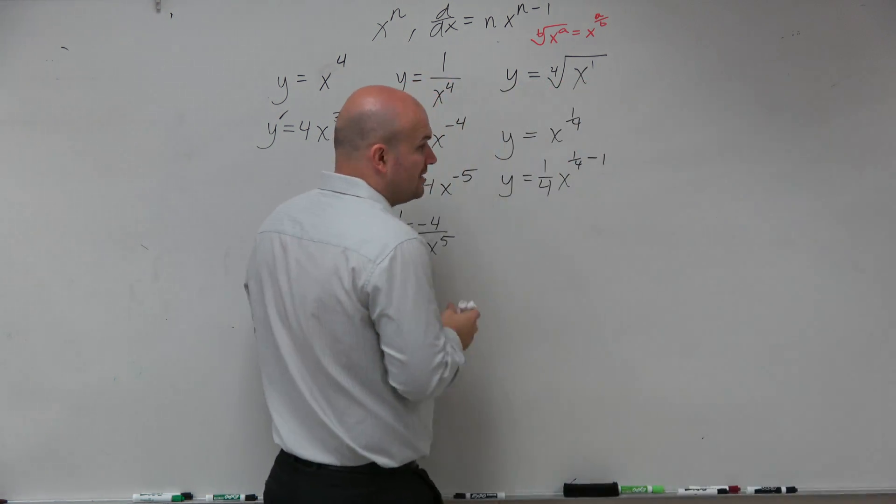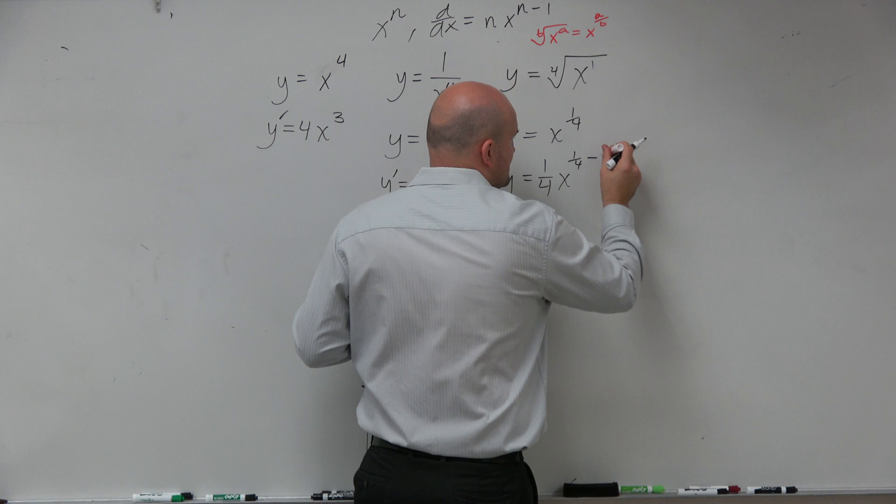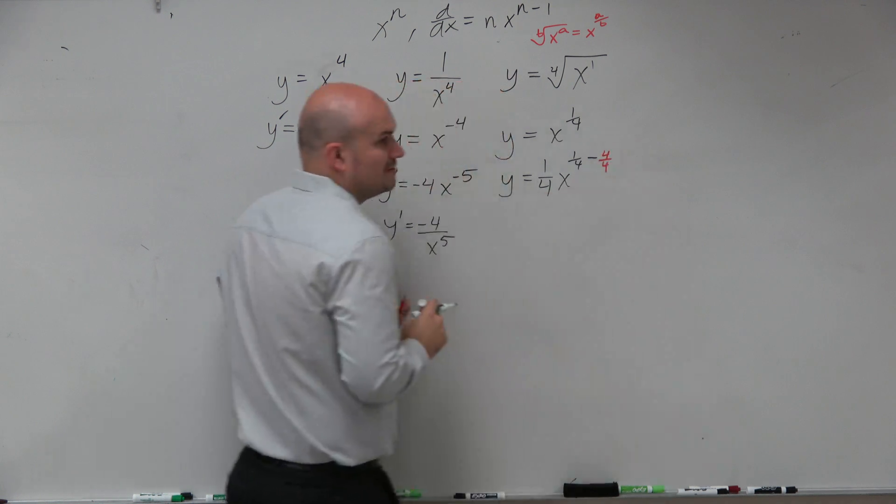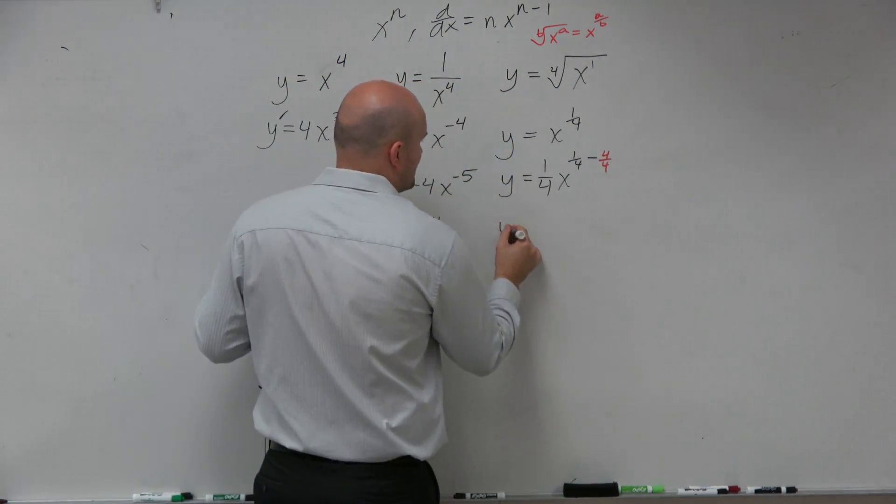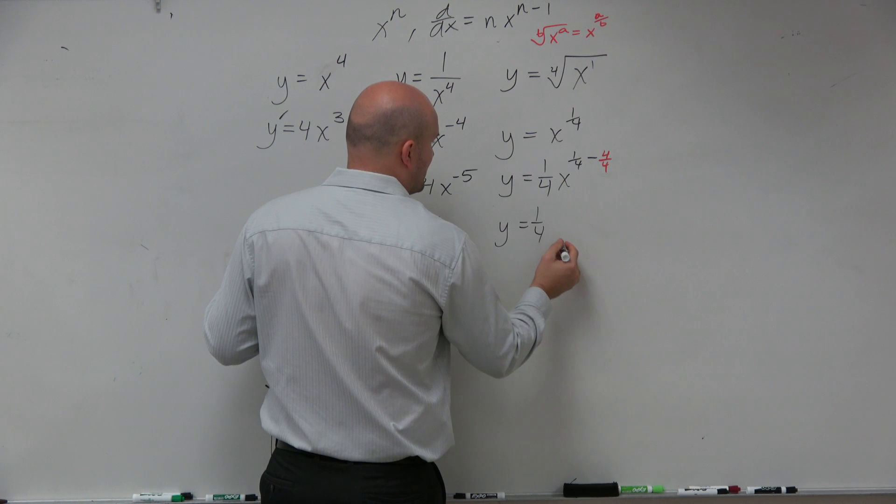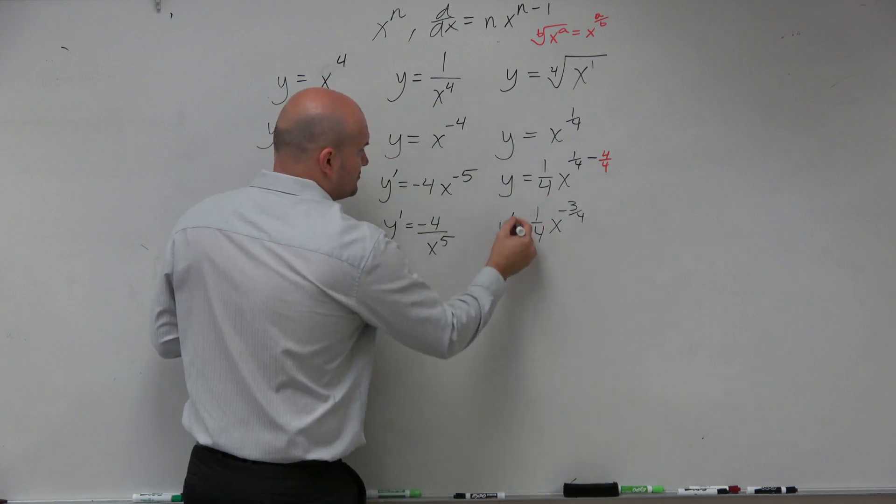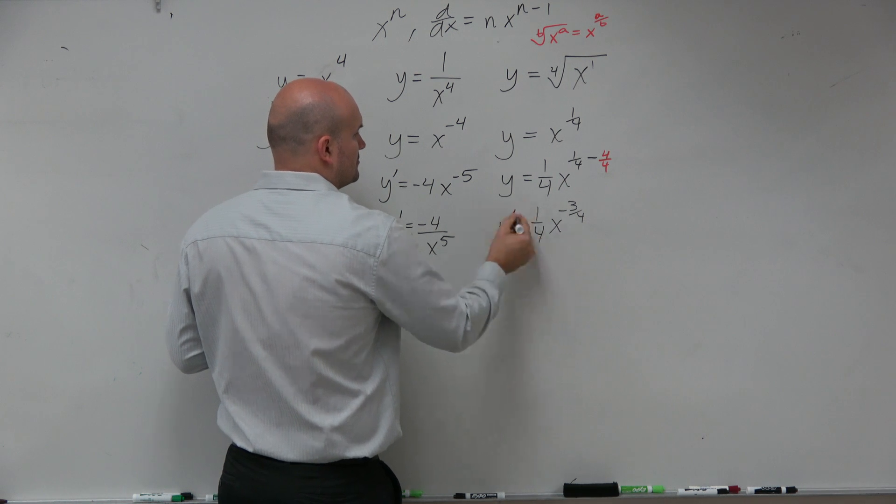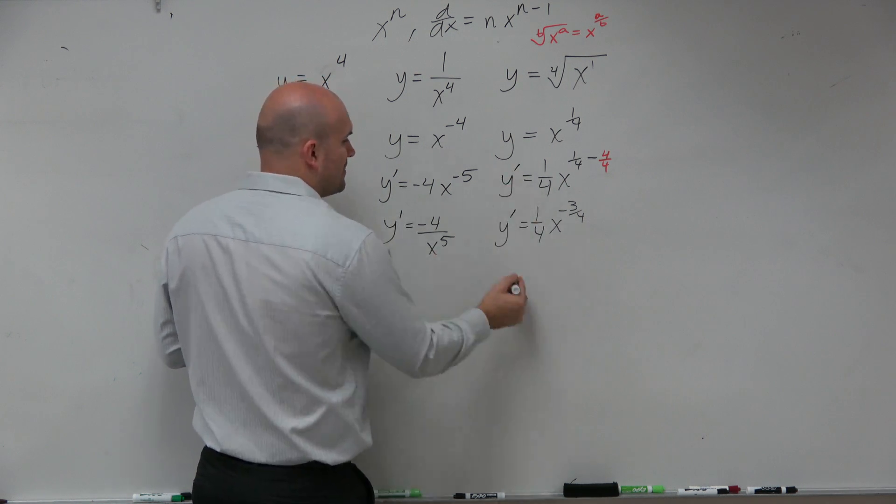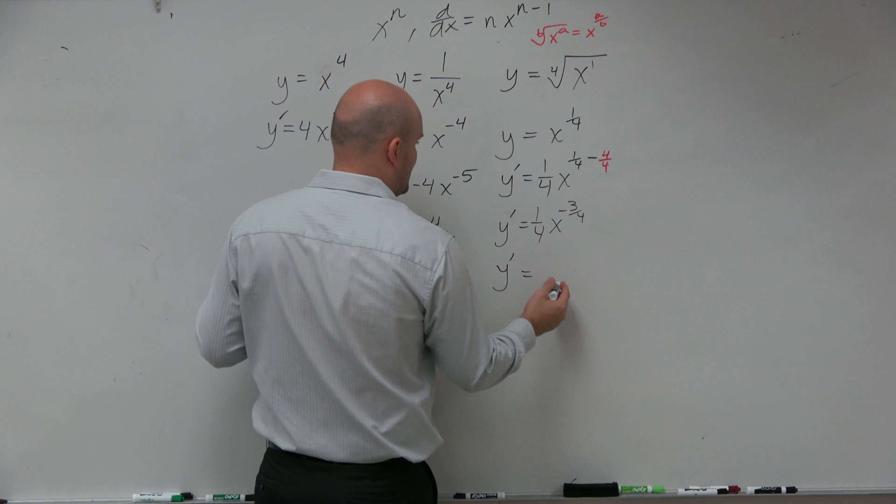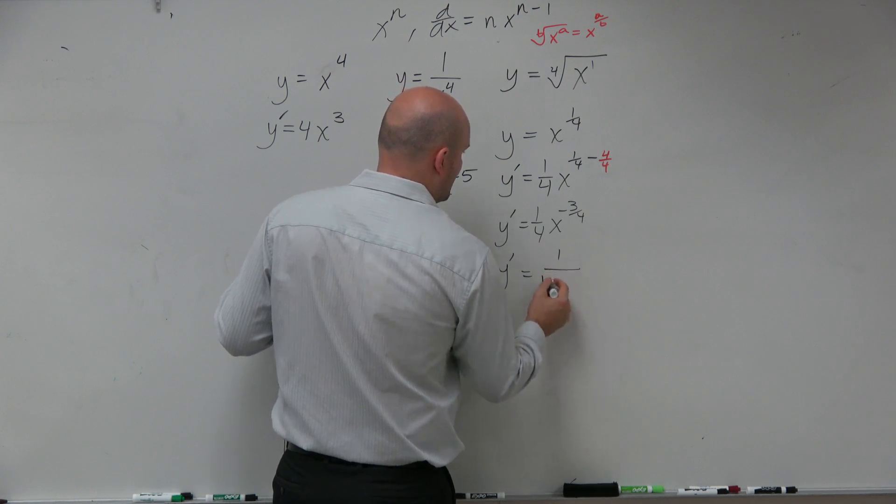So just remember, 1 is the same thing as 4 fourths. So really what we have is y equals 1 fourth x to the negative 3 fourths, which I've got to write my derivative. Then y prime is going to equal 1 over 4 x to the 3 fourths.